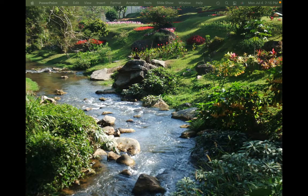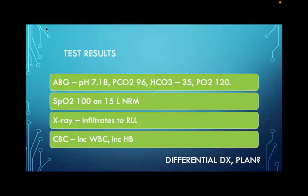PCO2 is 96, bicarb is 35, and PO2 is 120. How would you interpret that gas? It's respiratory acidosis - are we fully or partially compensated? Partially compensated, good.